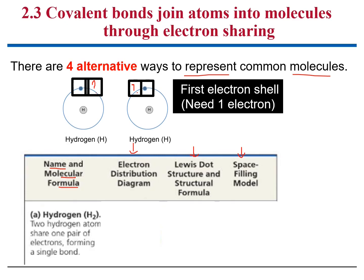This is the electron distribution diagram, which will show you only the two electrons that are being shared, and it shows you the orbitals of the electrons.